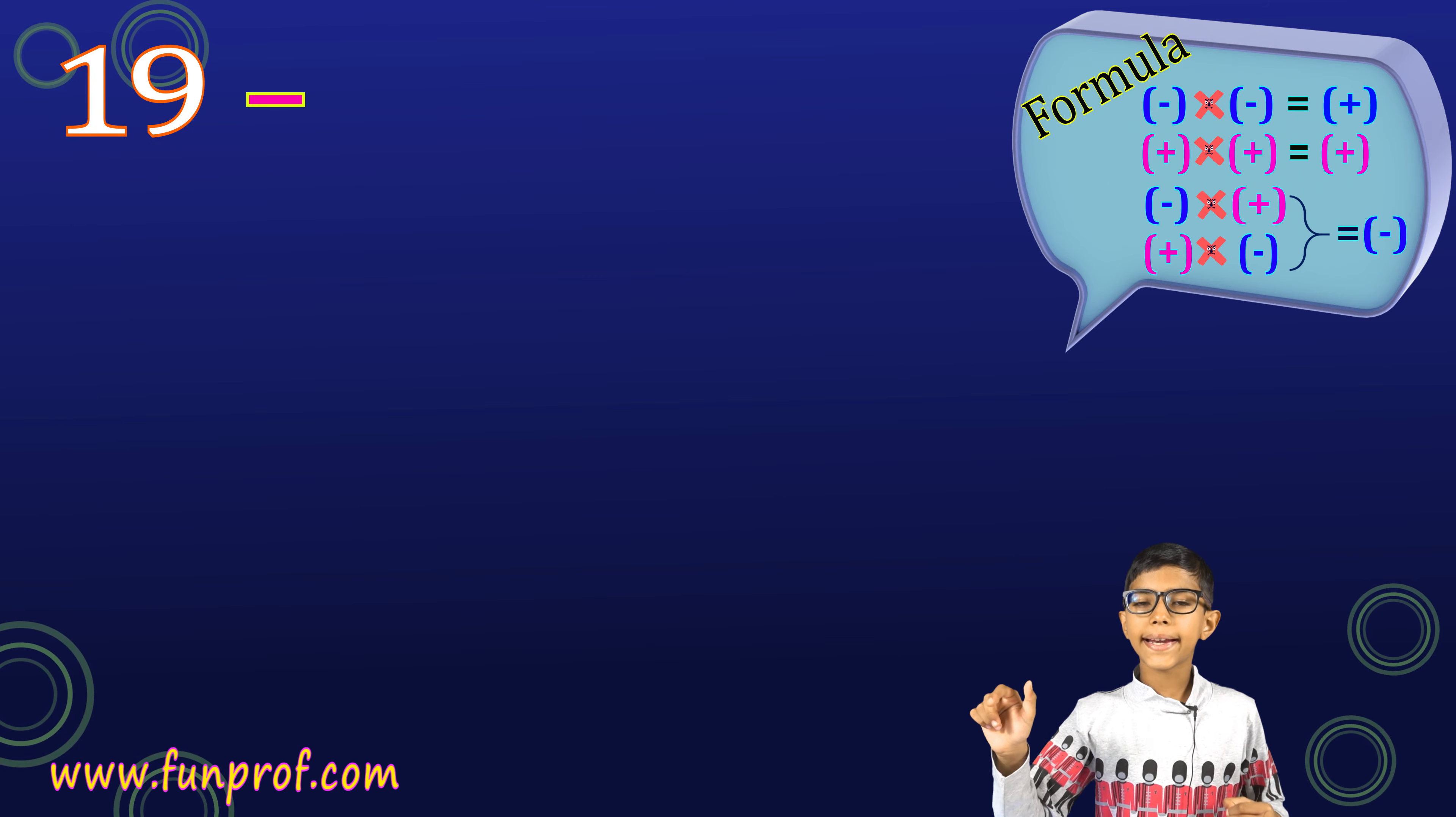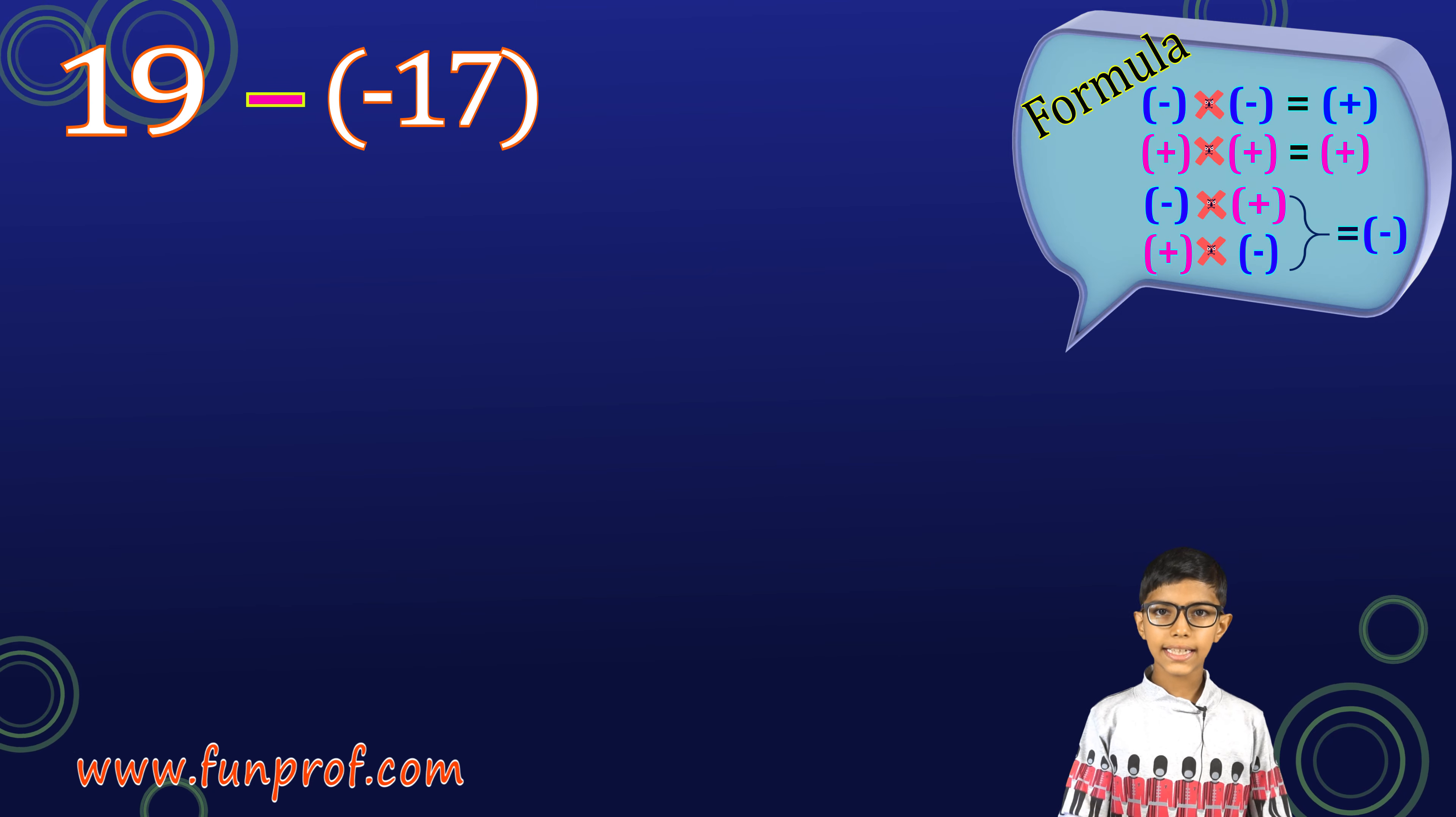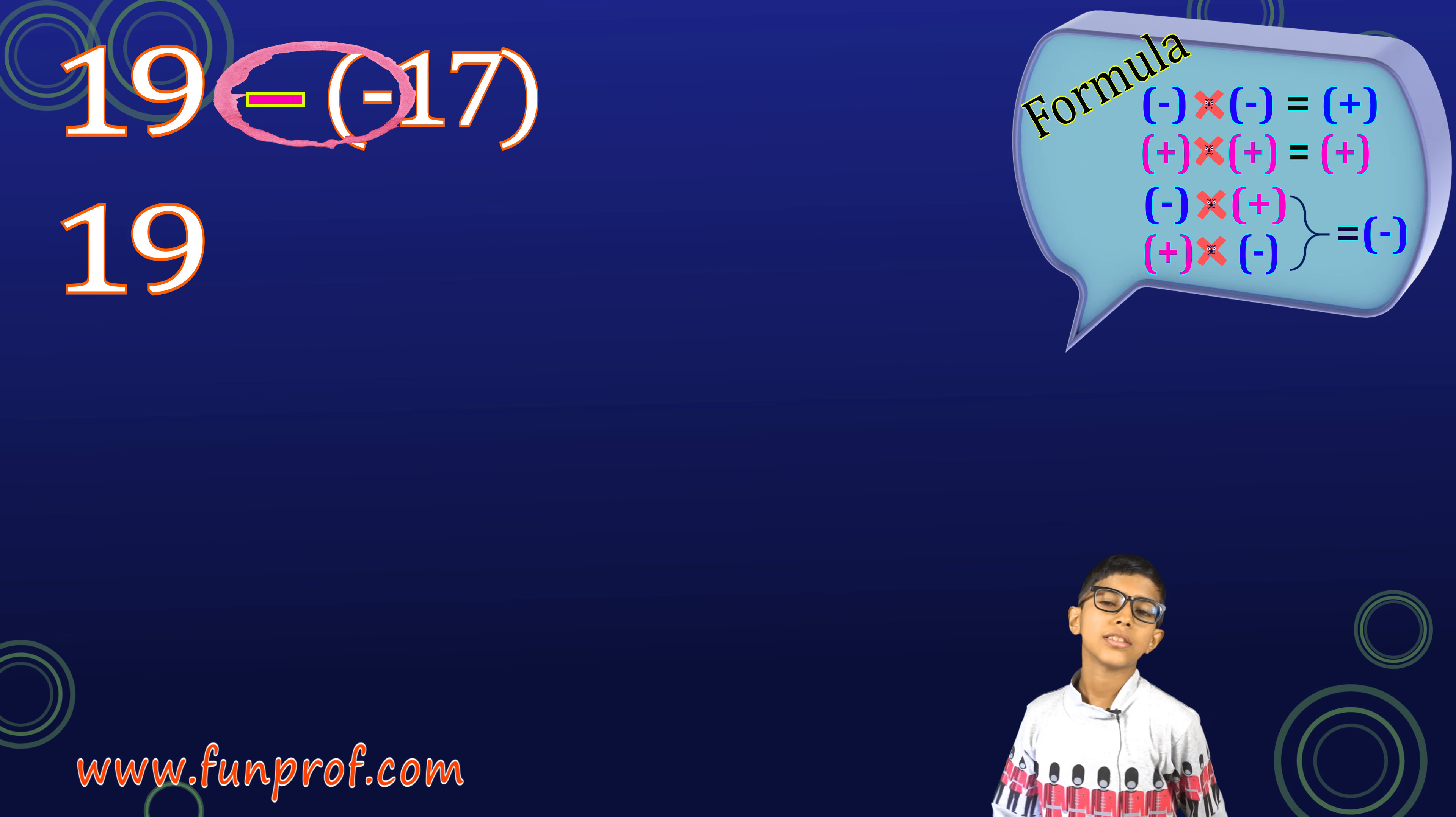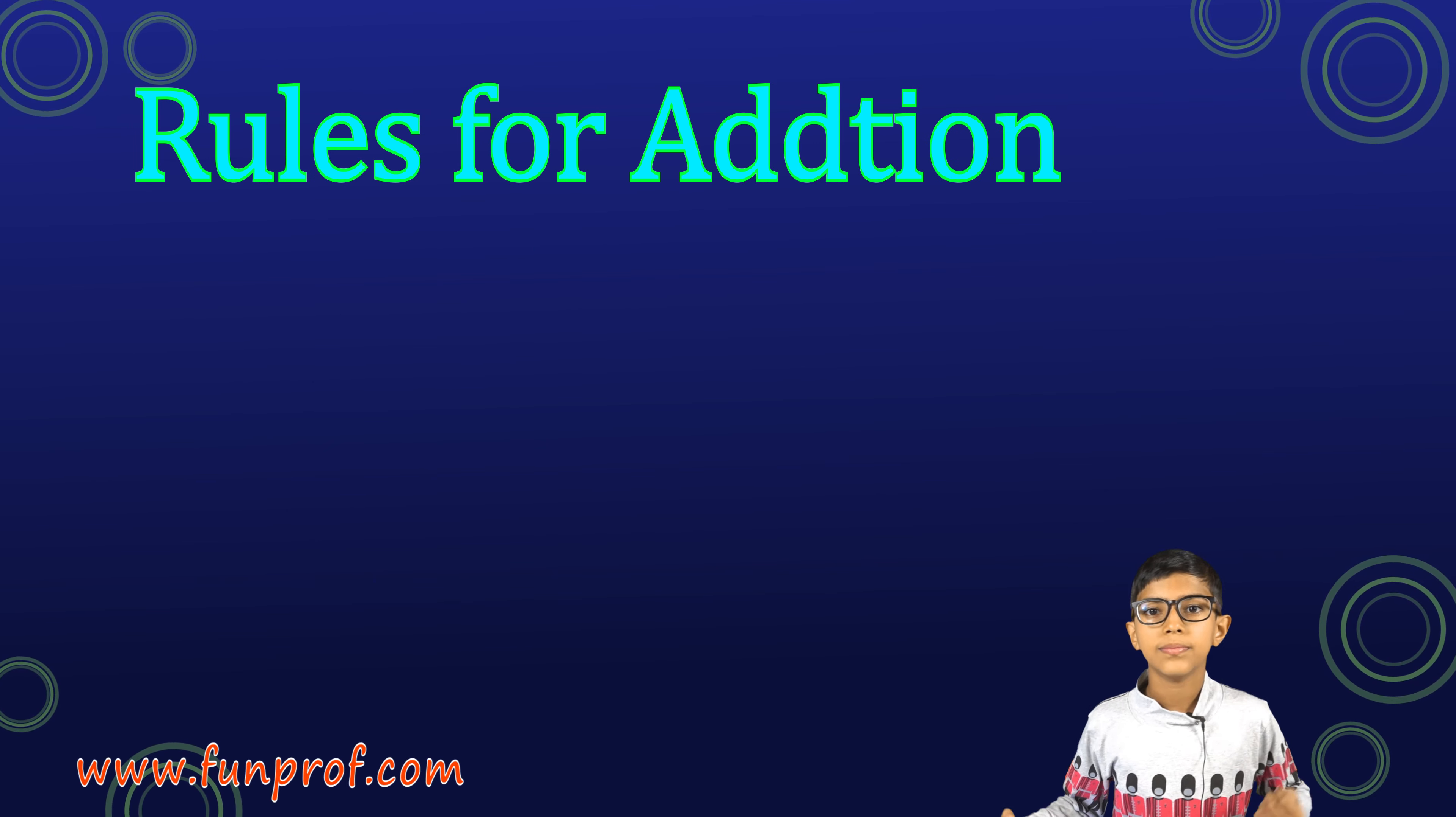Now, we have one more to do. 19 minus minus 17. We have 19 and we subtract minus 17 from it. So, minus 17 is in the bracket. When we open the bracket, we multiply it to minus. Now, we have plus. So, 19 plus 17, which is very simple. 36.